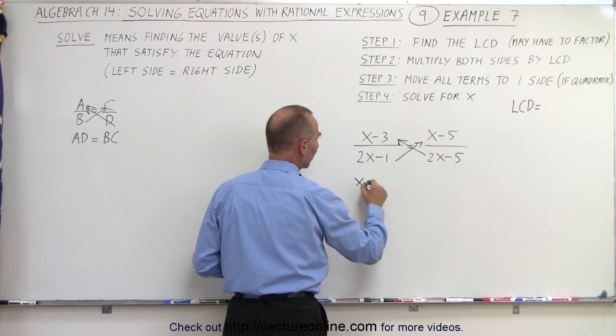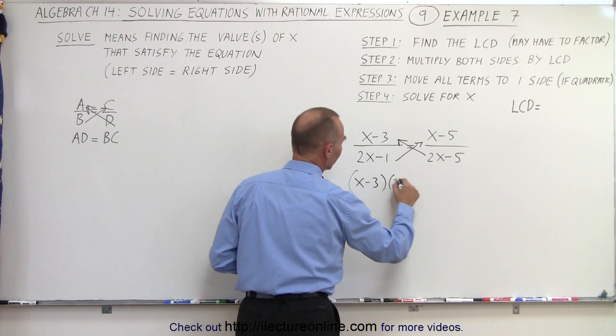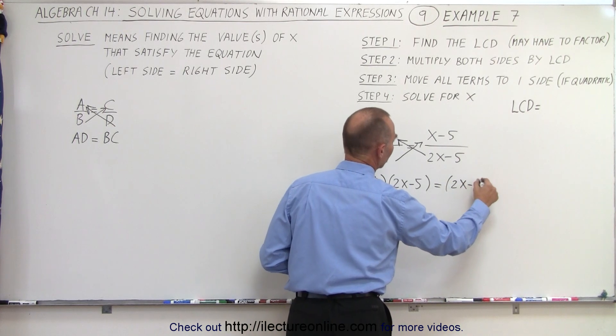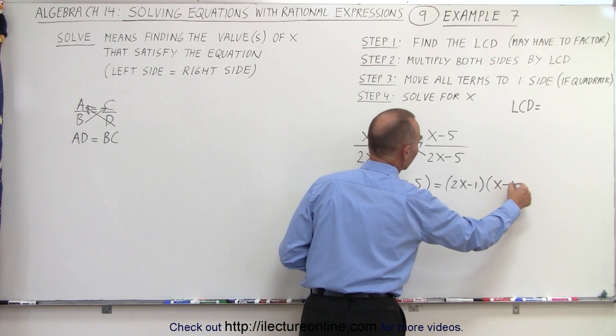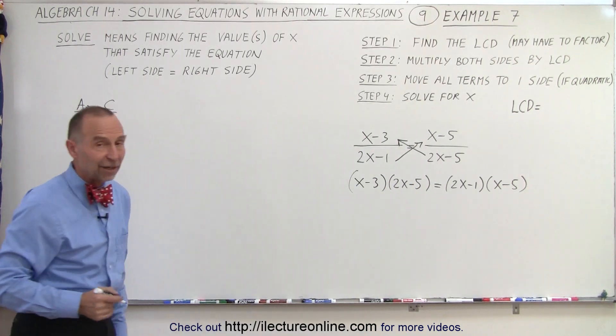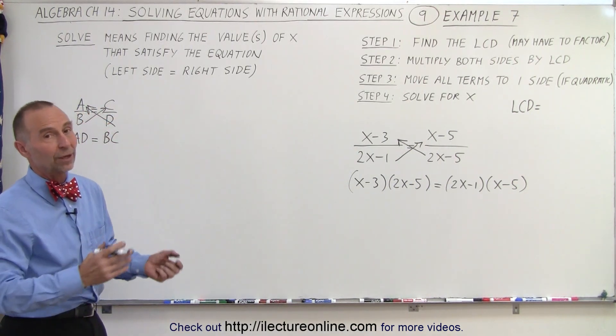and this becomes x minus 3 times 2x minus 5 equals 2x minus 1 times x minus 5. We get the exact same result if we multiply both sides by the lowest common denominator, but this is simply quicker.